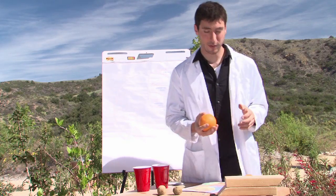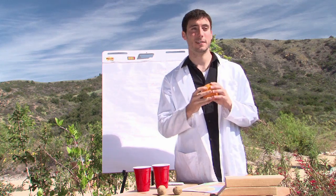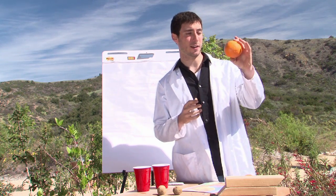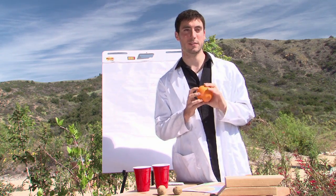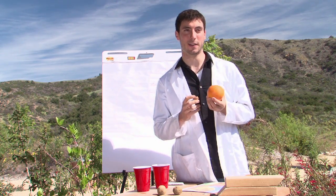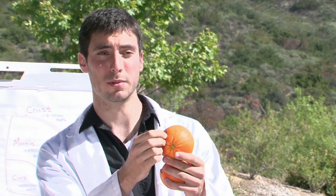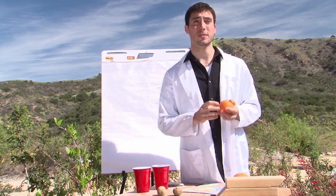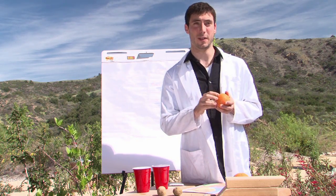A good plate tectonics model can be made from everyday objects. For example, if you just take an orange, it's easy to make a model of the earth that will easily demonstrate plate tectonics to your students. You're going to want to carve your orange out into little plates. These will represent the earth's plates that float on top of the mantle.